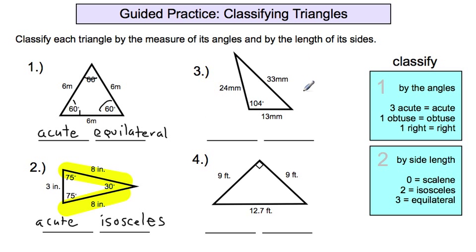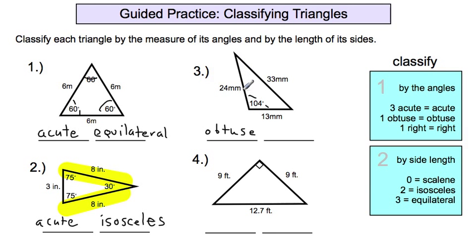Moving on to number three. Looking at the angles, I see one obtuse angle — 104 degrees is greater than 90, which makes it an obtuse angle, and therefore this is an obtuse triangle. For the sides, we have 33 millimeters, 24 millimeters, and 13 millimeters — zero sides being the same length. So we have an obtuse scalene triangle.